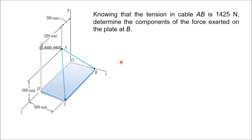Determining the coordinates is the most important step in this type of problem. Point B: its distance along x is 900 mm (the width of the plate). Since it lies in the xz-plane, its y-coordinate is 0. Since it lies in the xy-plane boundary, its z-coordinate is also 0. Therefore, the coordinates of B are (900, 0, 0).